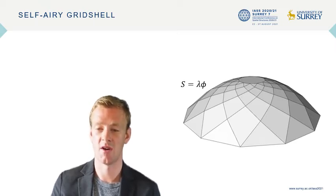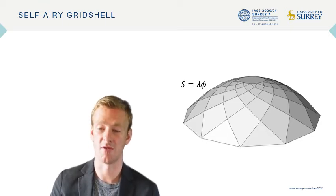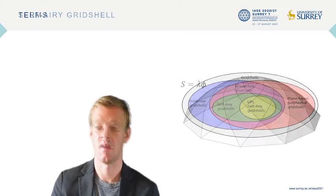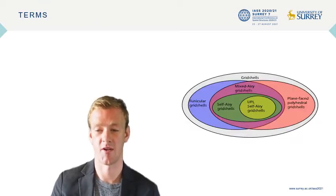There is a further special case when the grid shell is funicular under a uniform projected load — this is called a UPL self-airy. These definitions can be neatly summarised in a Venn diagram.